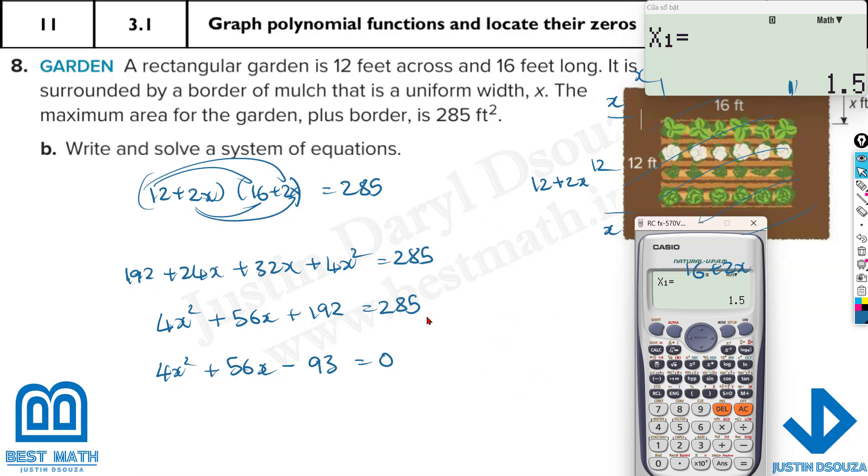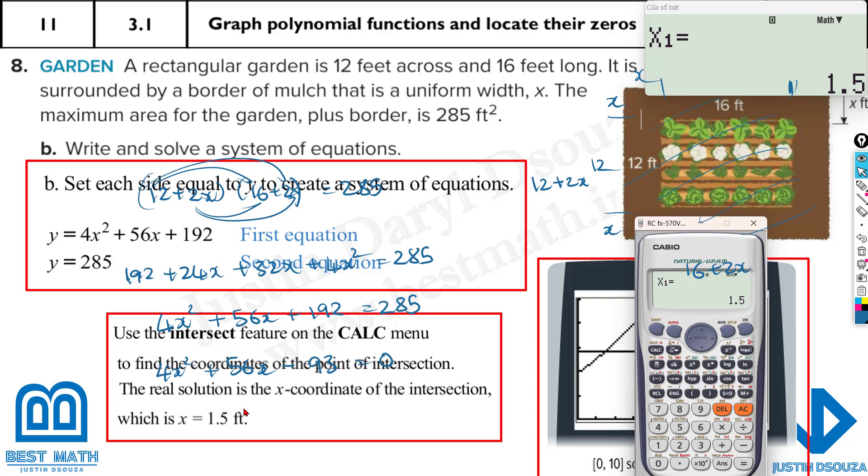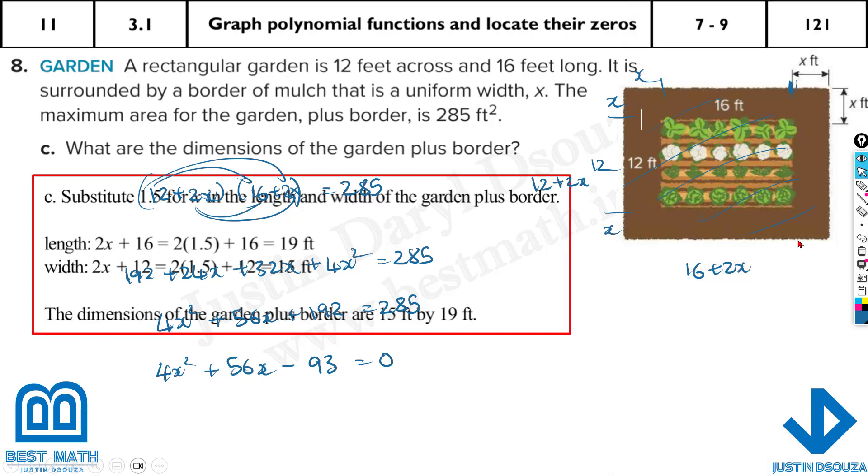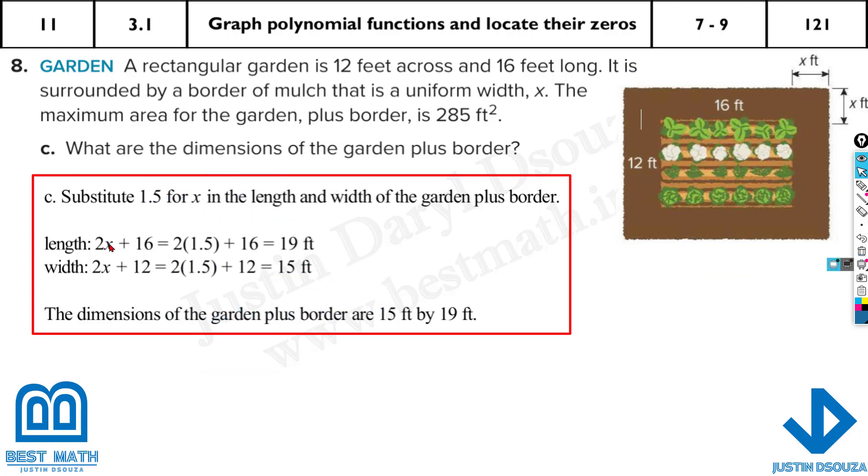See, this is the equation. Now when you solve it, here the graphing calculator is used. You'll get x = 1.5. So now substitute it back into the equations, 1.5 in both these dimensions, 2x + 16 and 2x + 12. You multiply x as 1.5 and solve it up. You'll get 19 feet and 15 feet. So the height and width are found out.